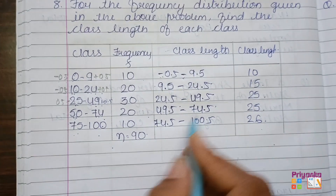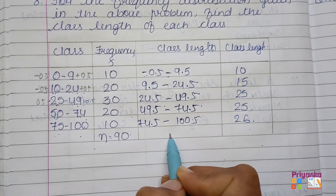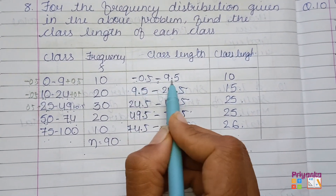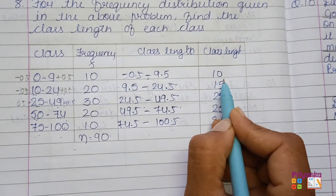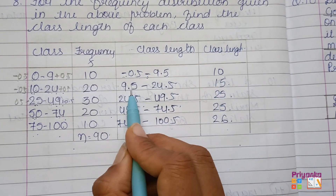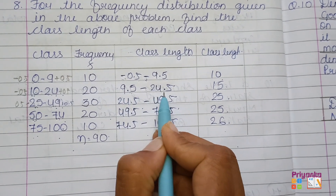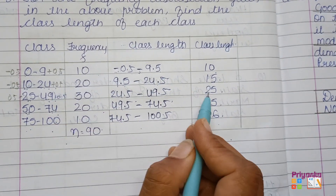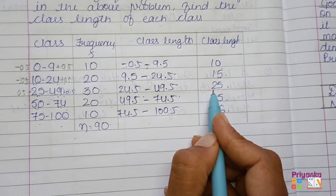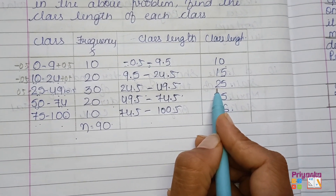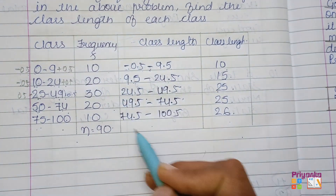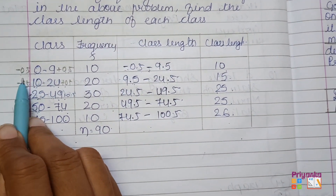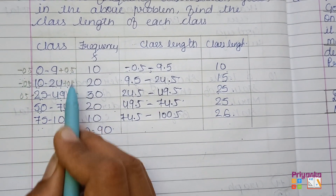Continuing, 100 plus 0.5 gives 100.5. Now you can find the distance between these boundaries. Minus minus gives plus: 0.5 plus 9.5 gives 10. Take your calculator and type 9.5 minus 24.5 and you will get 15. The first quick method saves time in the examination, while this systematic formula method using minus 0.5 and plus 0.5 gives the actual class length.